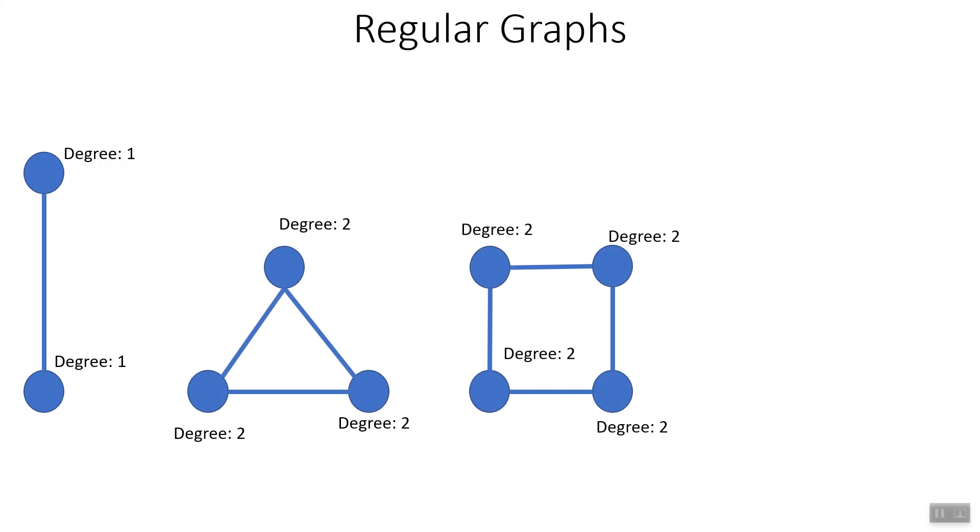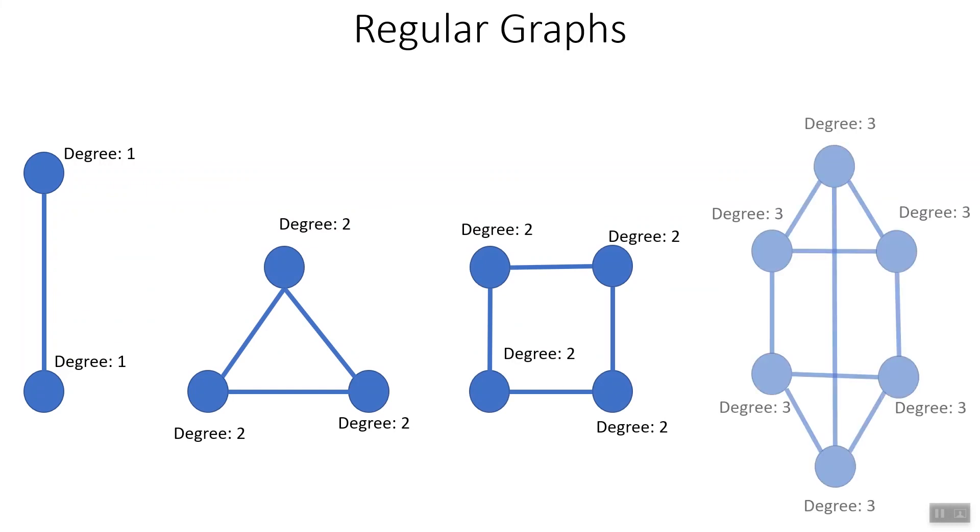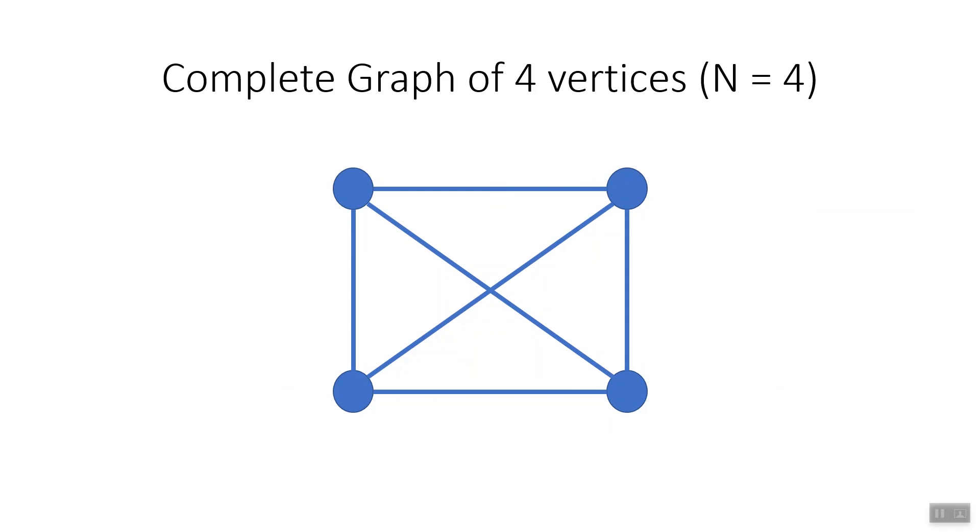Using our new terms, we can define a new type of graph: regular graphs. Regular graphs are graphs in which every vertex has the same degree, or in the case of directed graphs, the same out-degree and the same in-degree. A complete graph is a special type of regular graph, in which every vertex is connected to every other vertex in the graph. Meaning that in a complete graph of n vertices, each vertex has degree n-1.